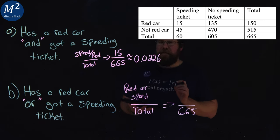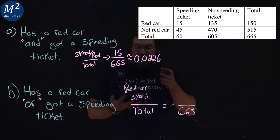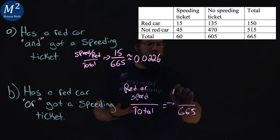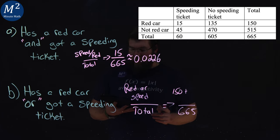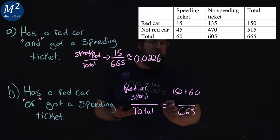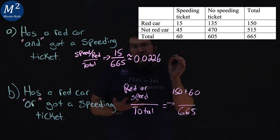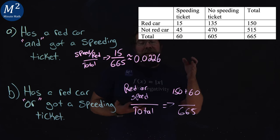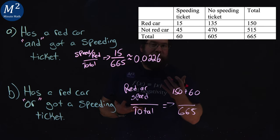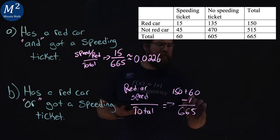If we look at our column here, we have this number of speeding tickets and then the row is the number of red cars. Red car was 150 plus the total number of people who got a speeding ticket is 60. But if you notice in there, we double counted the combo of red car and a speeding ticket. That's in that 60. So we need to subtract that 15, the 15 people who were double counted here. So we minus a 15.